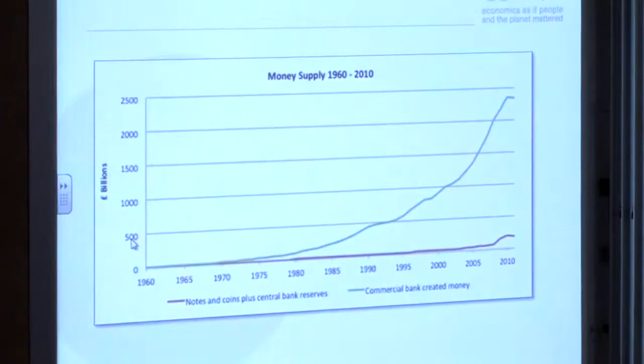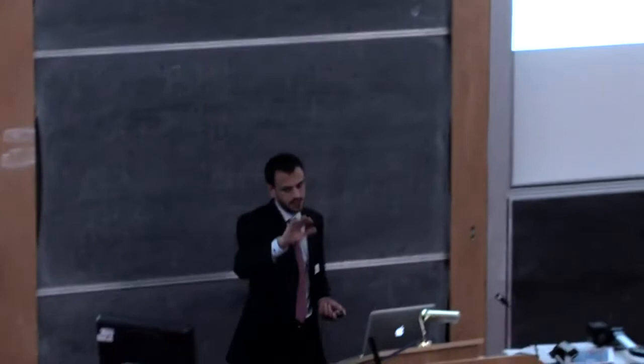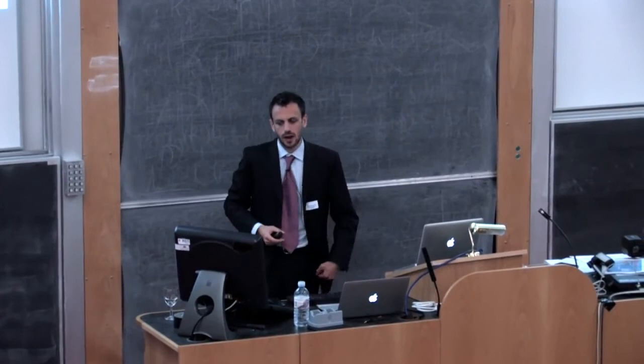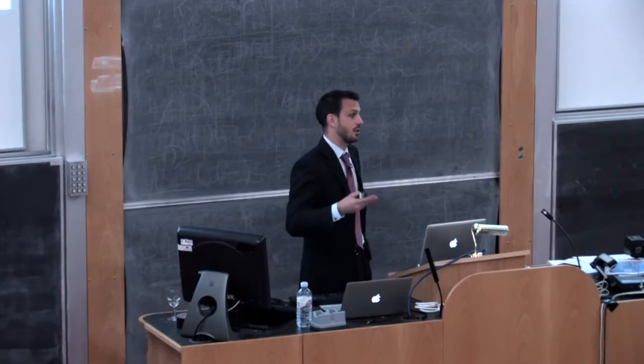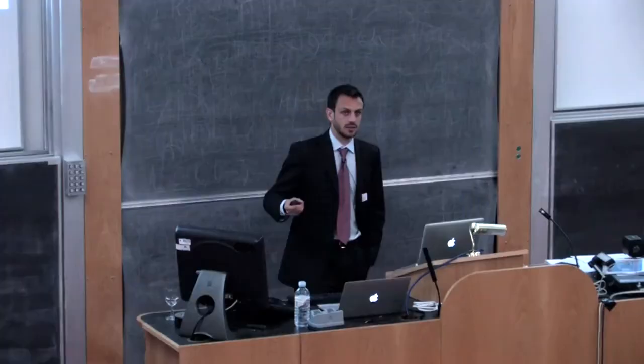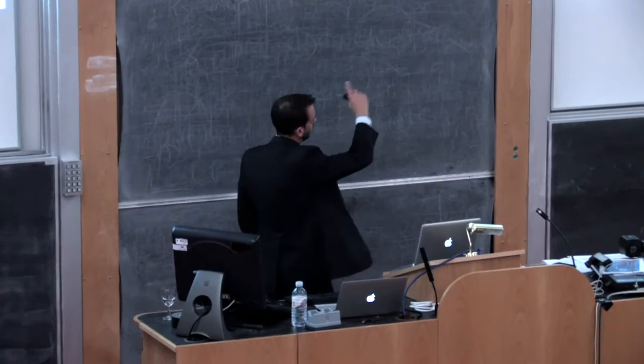And you can see that up to the late sixties, the amount of commercially, the bank created money in notes and coins was quite similar. And then since then, commercial bank money has kind of exploded exponentially away to the point where 97% of money is now essentially created by banks. And so we've had this move away from what a lot of us think of as money notes and coins towards this digital private bank money.